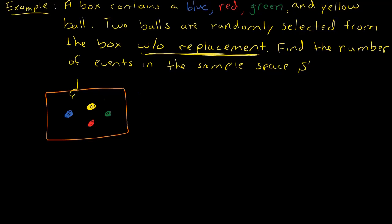That means that you go in and you select a ball, suppose it's the yellow ball, and the yellow ball comes out. Then for part two of the experiment, when you are selecting the second ball, that yellow ball is no longer in there. You do not put it back.